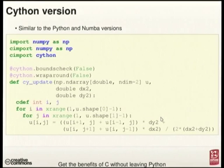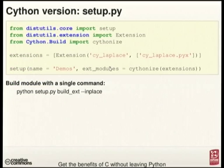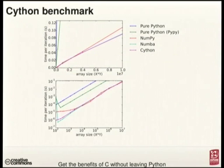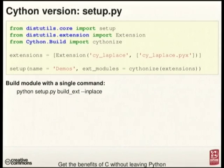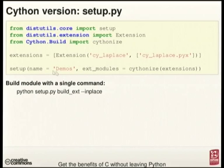Now the Cython version. This is very similar to our Python version, except we use cdef int for the i and j variables used to loop over the array. Apart from that, it's pretty much identical. I've included a couple of decorators here that help performance a little bit — we turned off some of the safety checks. The setup.py file is used to compile from C code to a shared object on Linux or DLL on Windows. The magic all happens in the cythonize command. Apart from that, it's all just standard distutils approaches. This creates an extension module called 'demos' in this case.